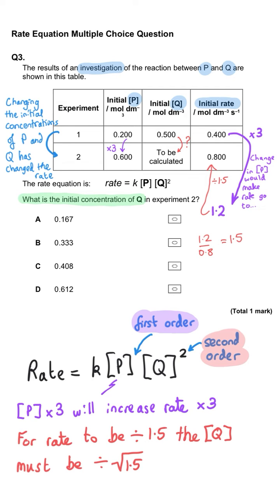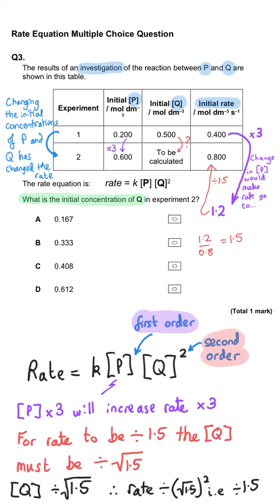Since q is second order, the change to q resulted in a 1.5 times smaller initial rate, meaning the change in concentration of q is the square root of 1.5. So we take 0.5 and divide by √1.5, which is 1.225, giving a concentration of 0.408. So C is correct.